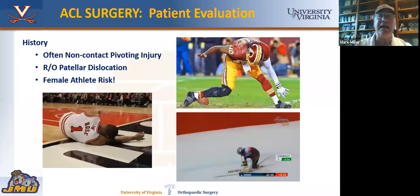The classic injury is a non-contact pivoting injury. The patella dislocation sometimes gets confused with this because it's the great mimicker. And as we all know, female athletes have a four to five times increased risk of injury.